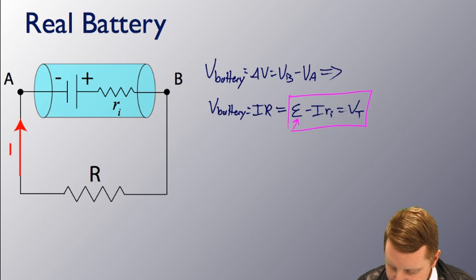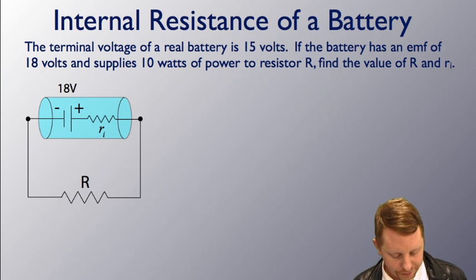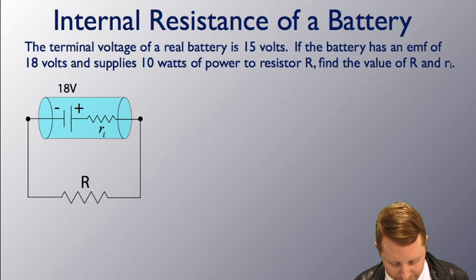Let's see how this plays out as we look at a problem. The terminal voltage of a real battery is 15 volts. If the battery has an EMF of 18 volts and supplies 10 watts of power to resistor R, find the value of R and RI.